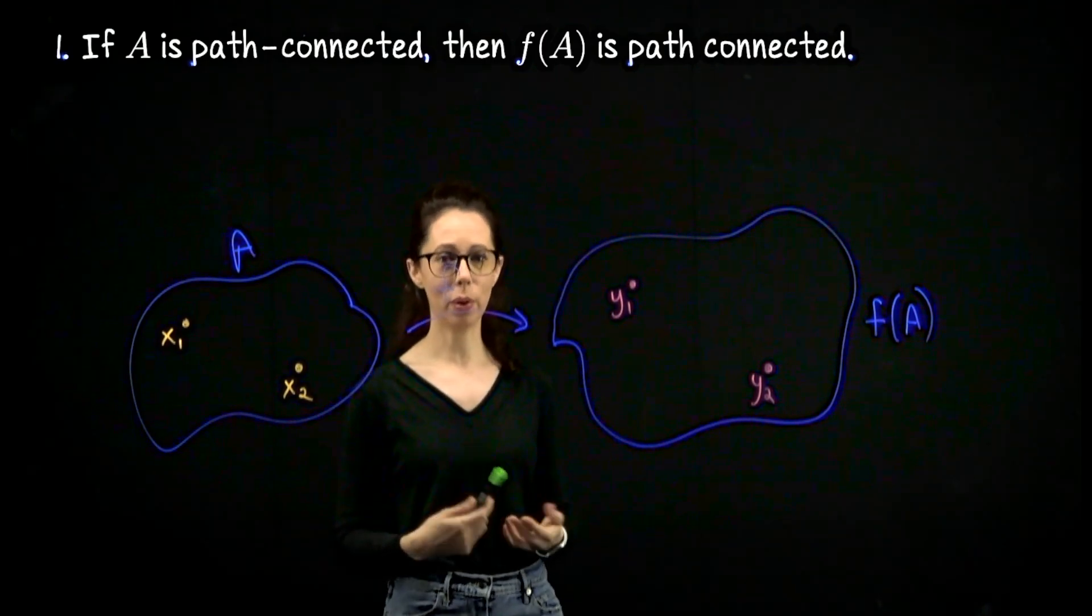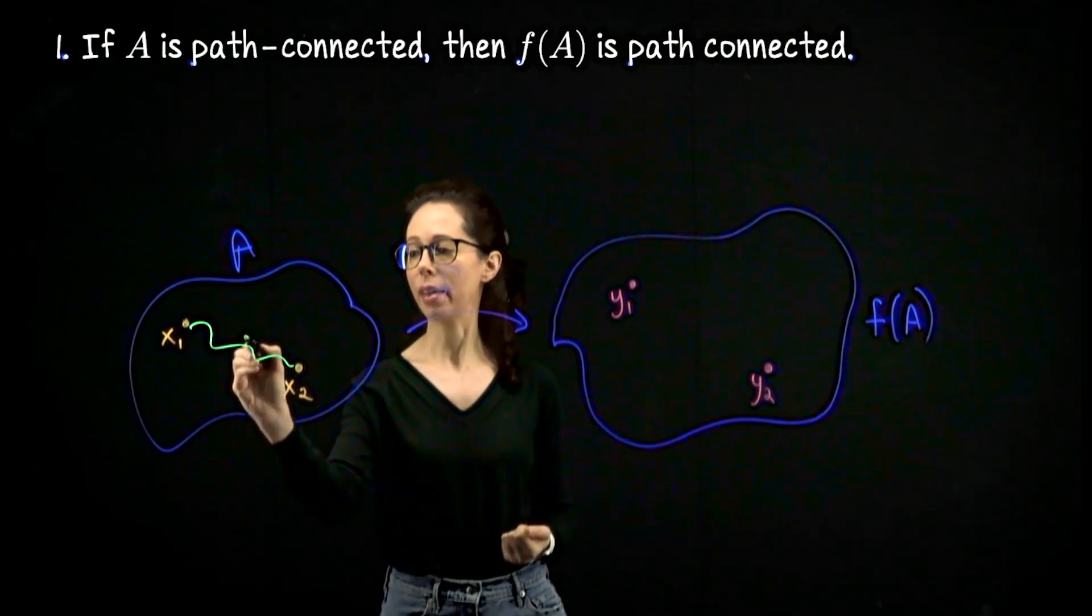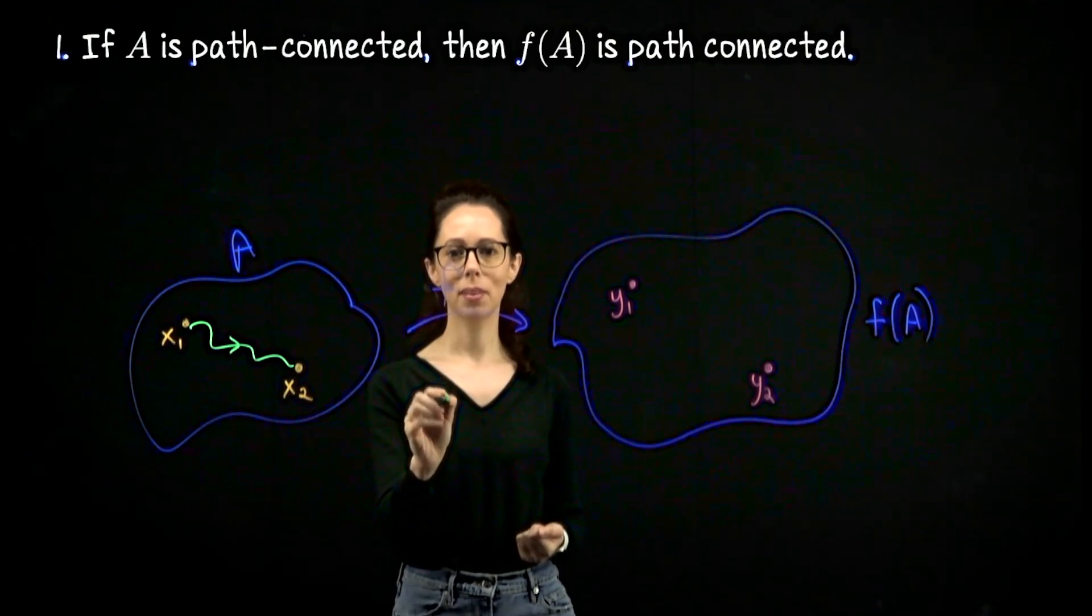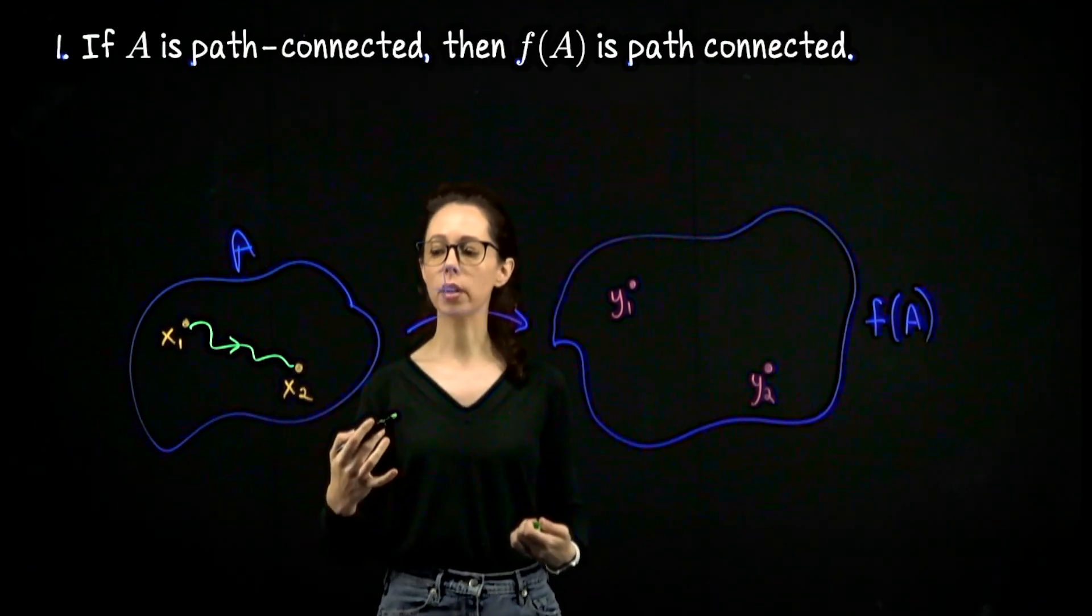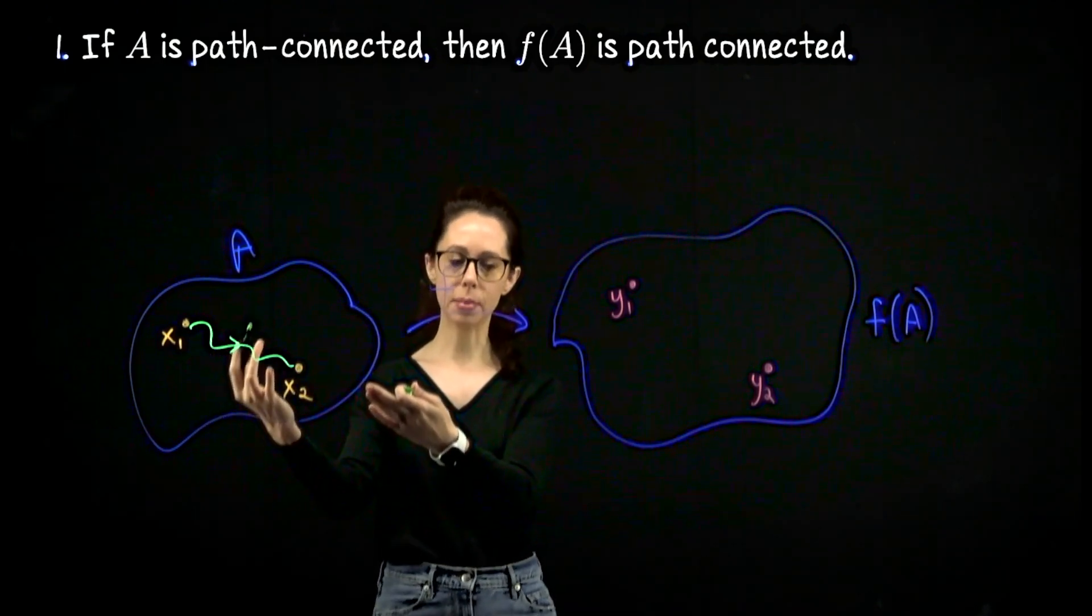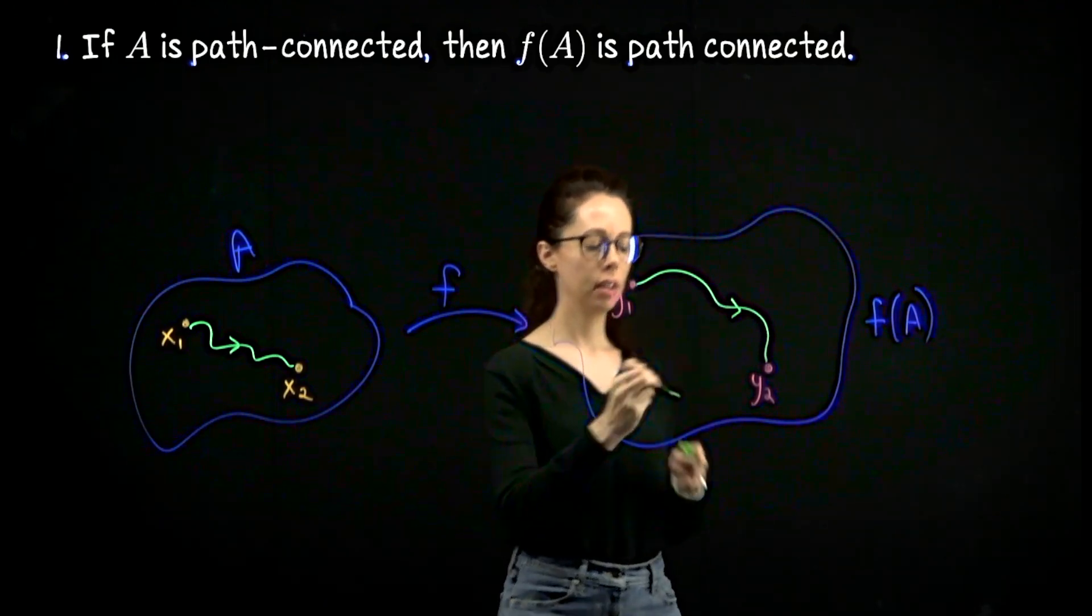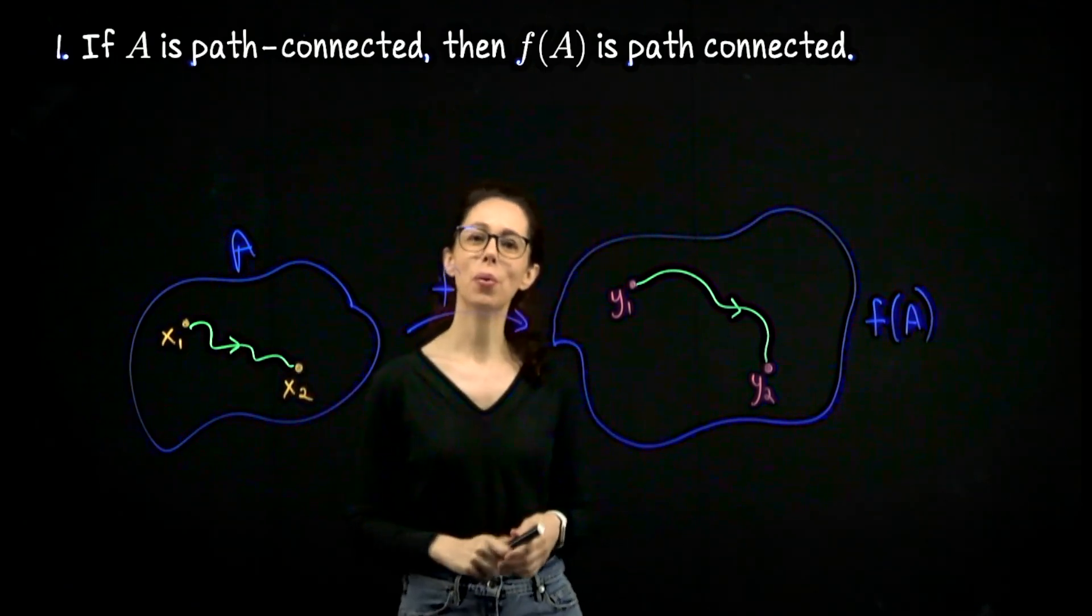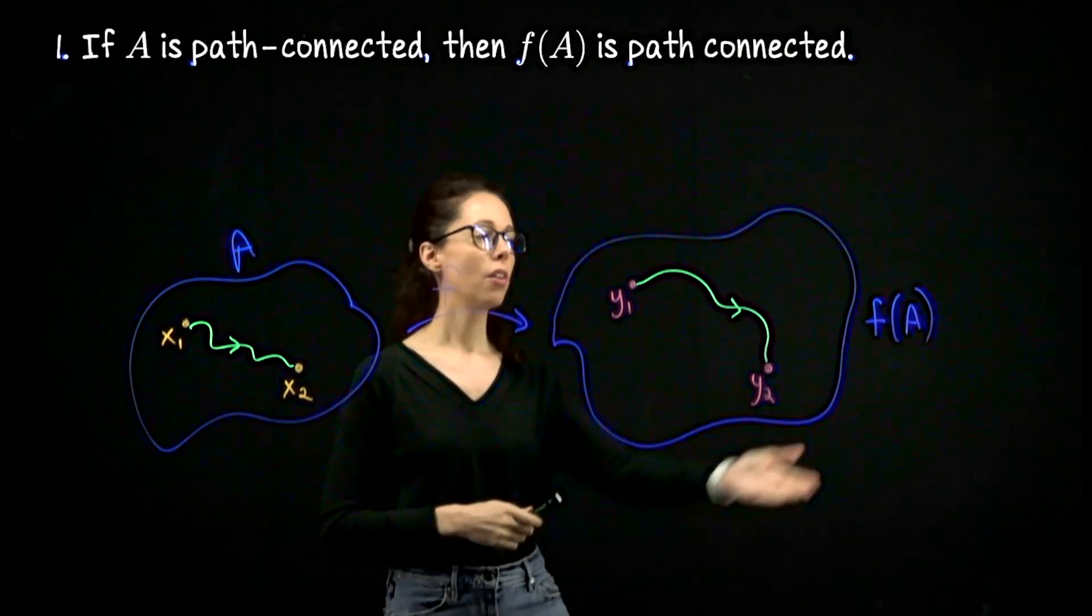And then we use the hypotheses that we were given in this statement. A is path connected, so there will be a path from x1 to x2. f is continuous. I want to evaluate f along this path. In other words, we are going to do a composition of continuous functions: f of the parametrization that describes this path. And that will generate a path in f of A which will go from y1 to y2, if this one went from x1 to x2, and which will be continuous. So we will meet the definition of path connectivity for f of A.